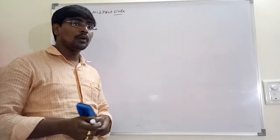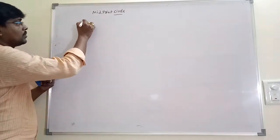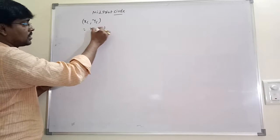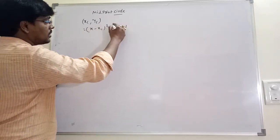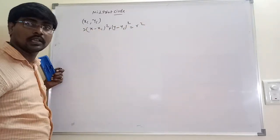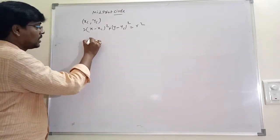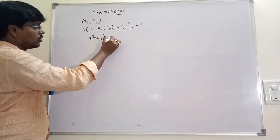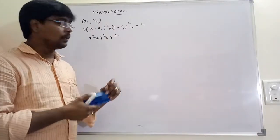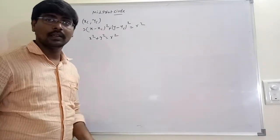Hi friends, today's topic is the midpoint circle algorithm. The circle equation, where the center is (xc, yc), is: (x - xc)² + (y - yc)² = r². If the center is at (0, 0), the equation simplifies to x² + y² = r². Our concept is: we know one point of the circle, and using that point we have to draw the entire circle.